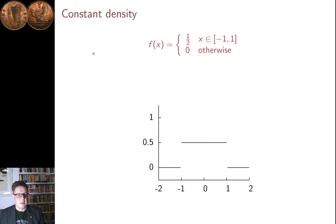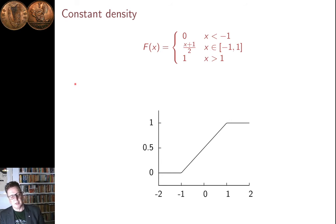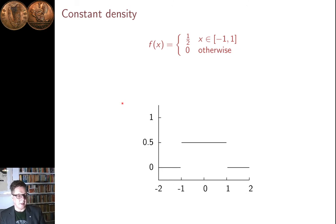Here is an example with constant density. This is one of the simplest continuous distributions. The density is one-half between minus one and one, and zero outside that range — written with the curly bracket notation for a piecewise-defined function. The width is two and the height is one-half, so the integral is one. We can integrate from minus infinity to x to get the cumulative. The cumulative is zero for x less than minus one, increases steadily until x equals one, and then stays at one — reflecting constant probability density between minus one and one.